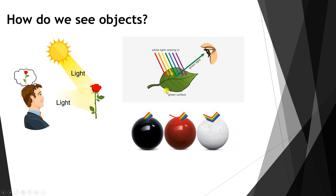The black color: when we see an object as black, it means all of the colors are absorbed by that object — none are reflected.